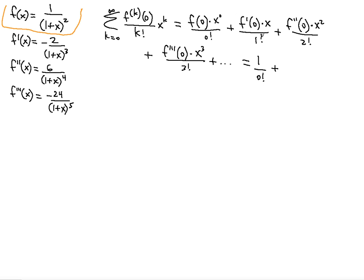The derivative at 0 is negative, so we have to make this a minus: minus 2 times x divided by 1 factorial. Then plus 6 — notice that 1 plus x when you plug in 0 it will always be 1, so we can think of the denominator as always 1. So plus 6x squared over 2 factorial, then minus 24 times x cubed over 3 factorial, and so on. Let's see what pattern that gives.